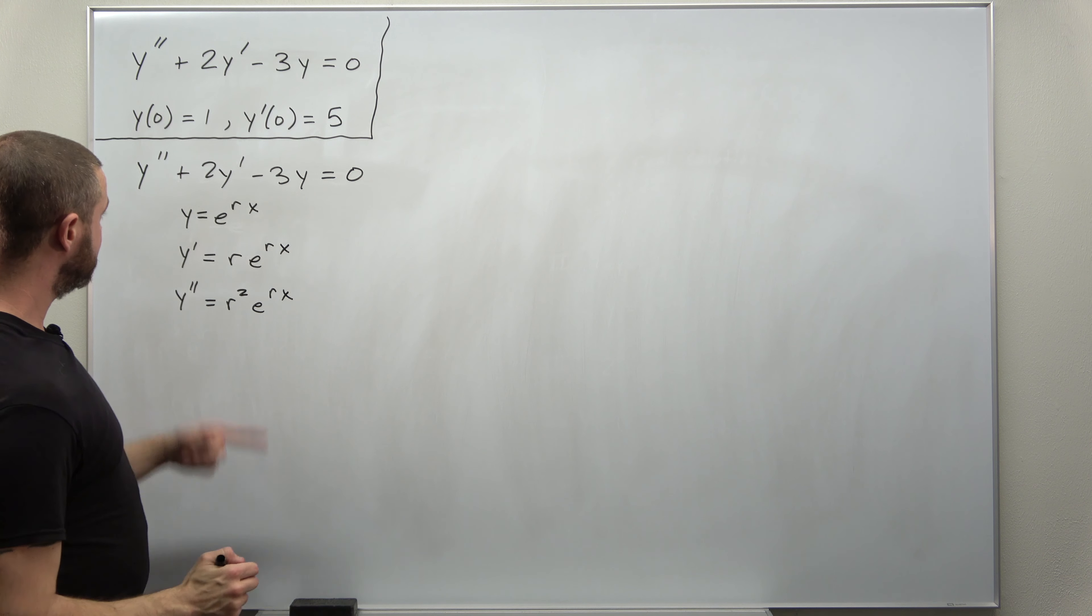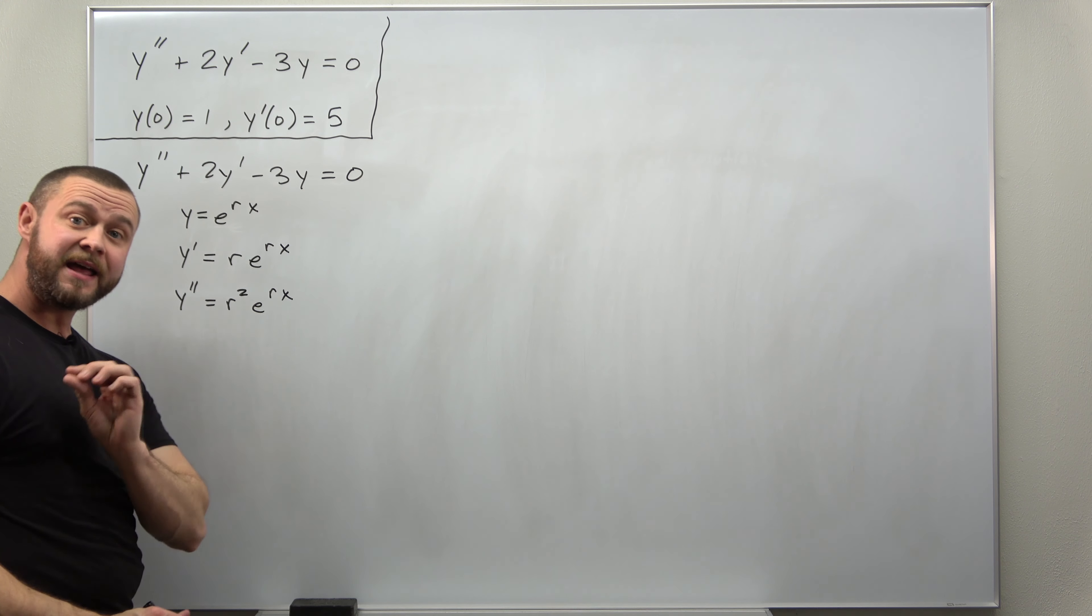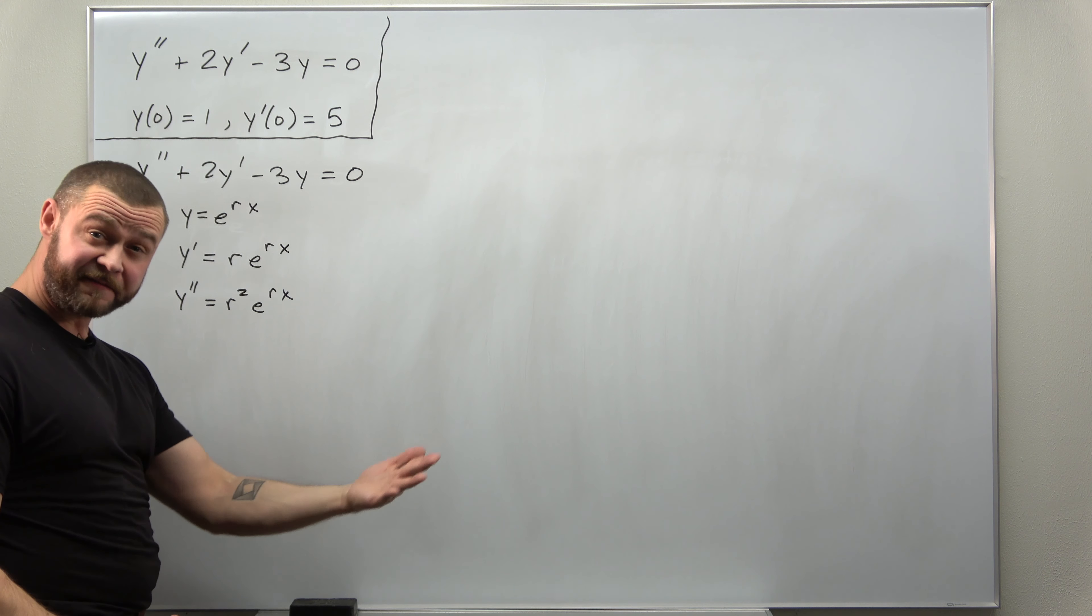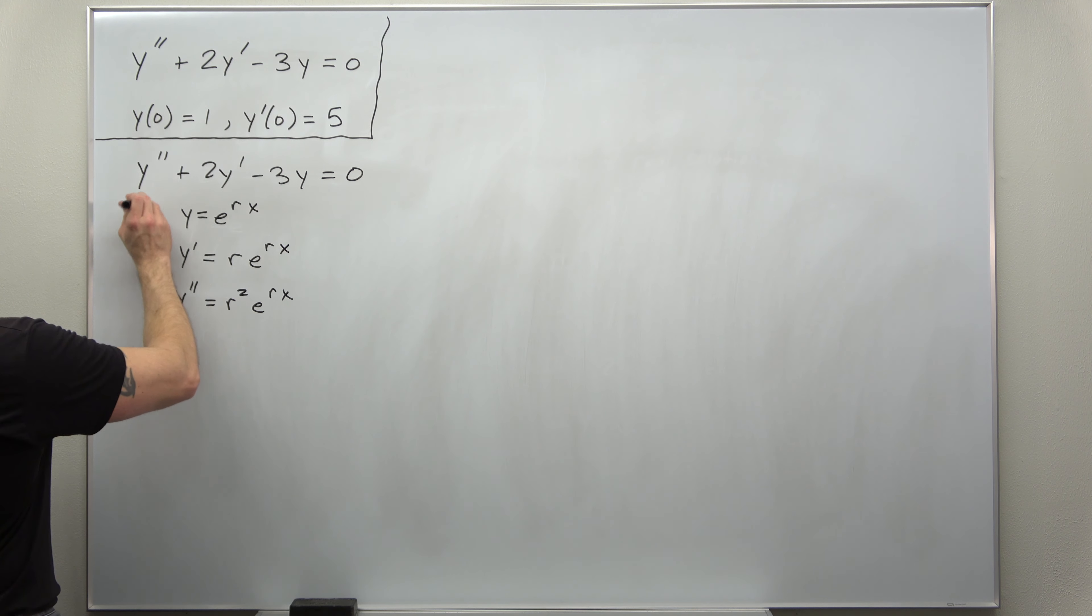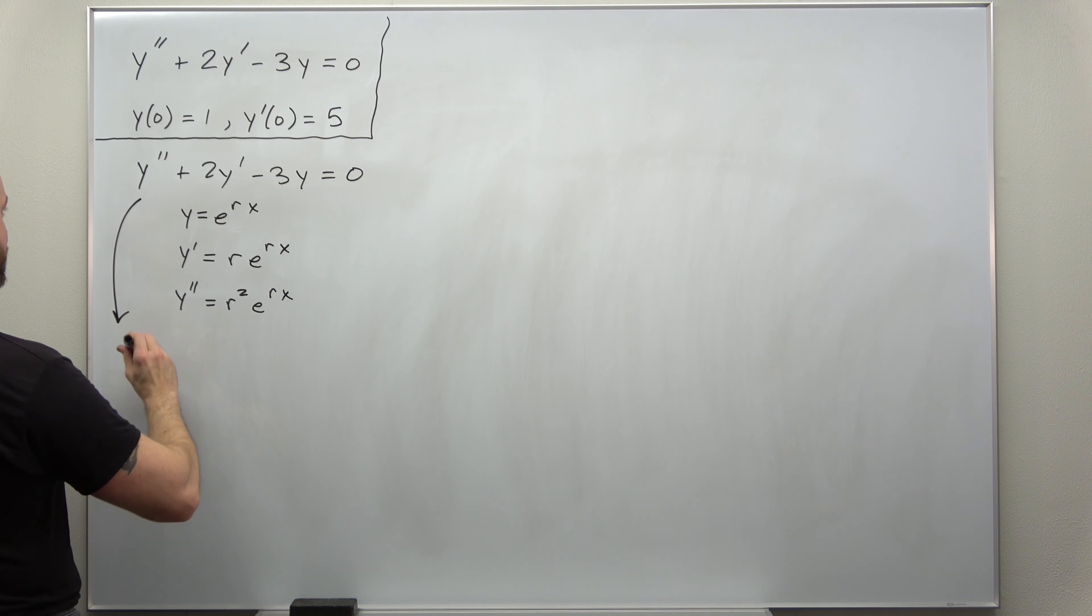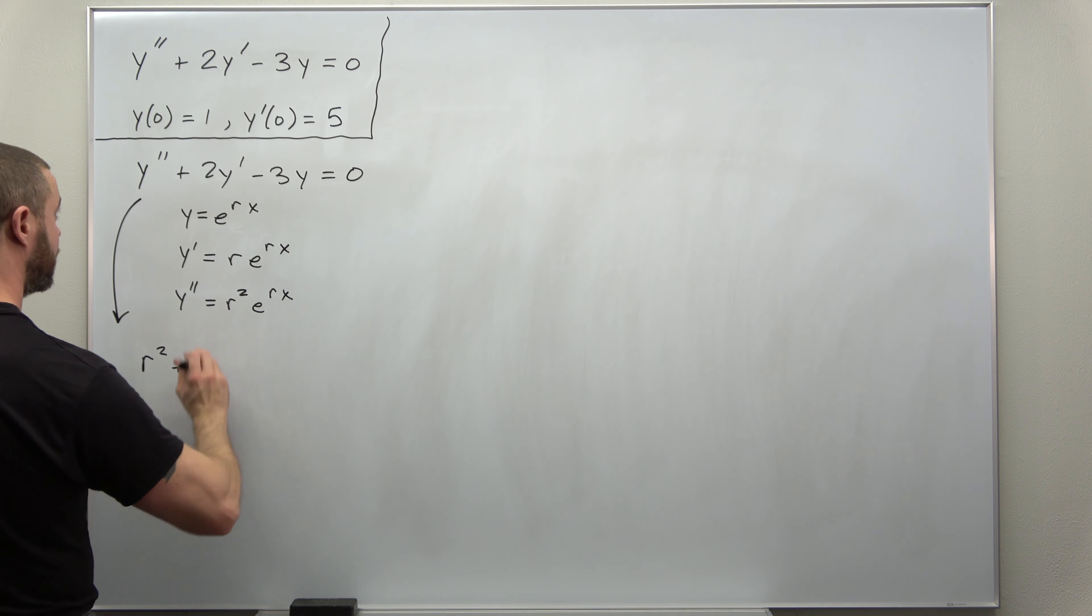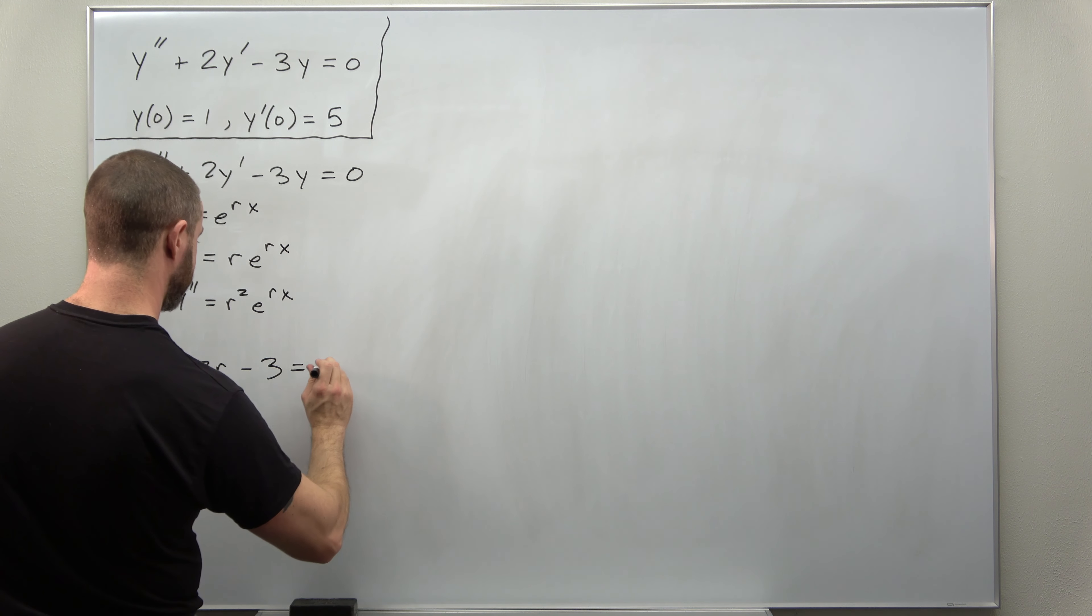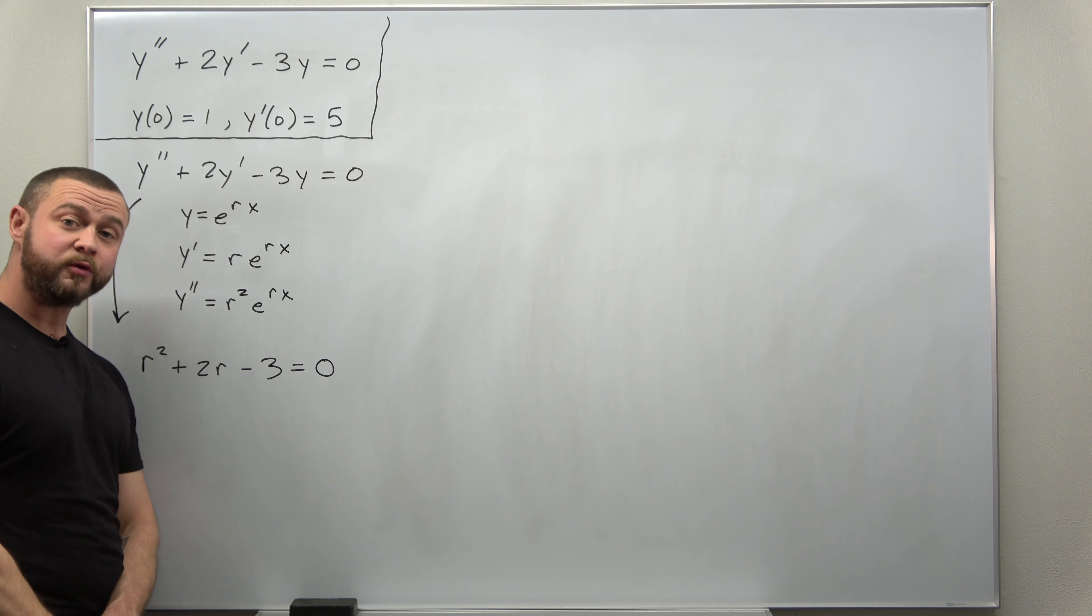If you plug all this in, notice each term contains the exponential function e to the rx, so you can already factor that out. And you get as your characteristic equation r squared plus 2r minus 3 equals 0.